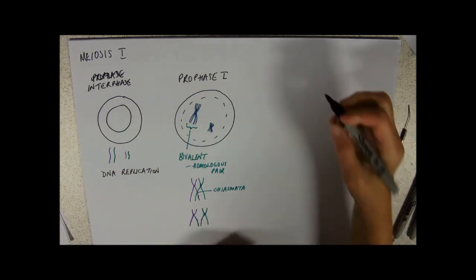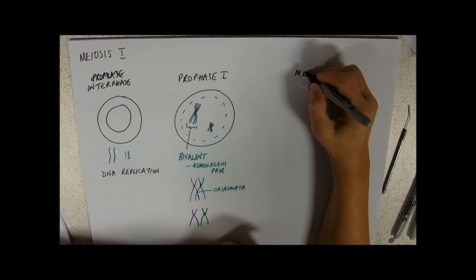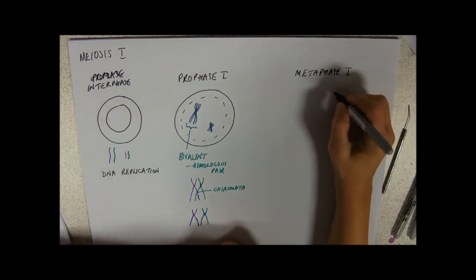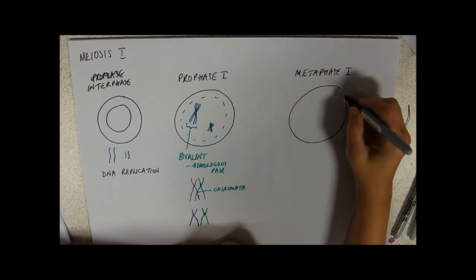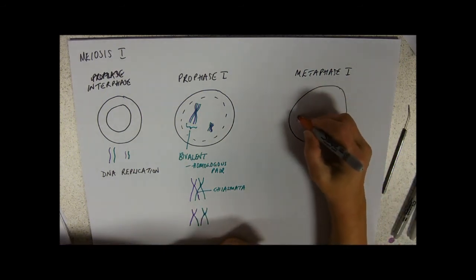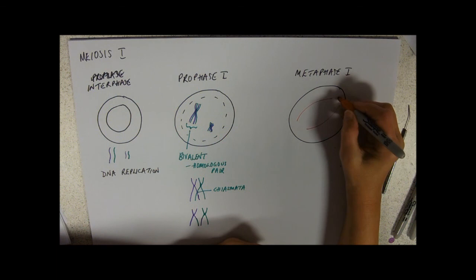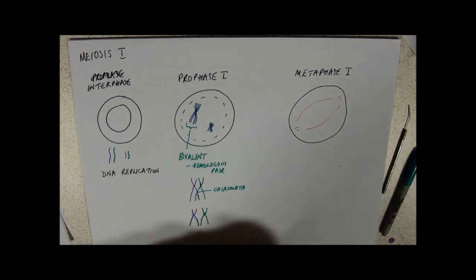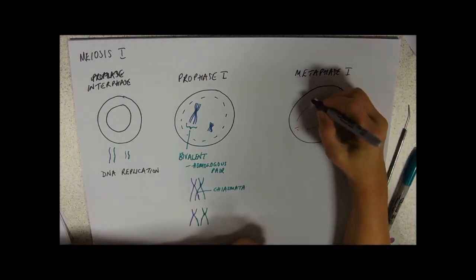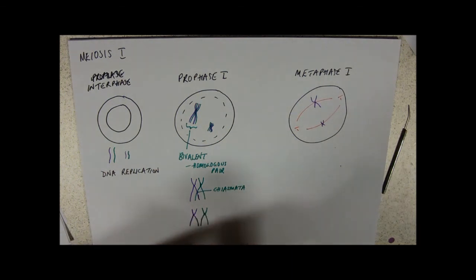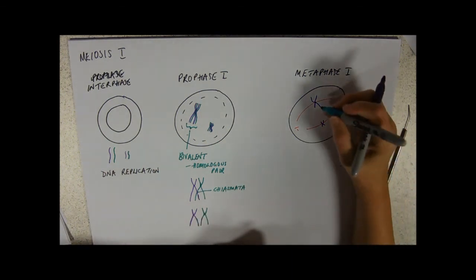Those chromosomes will then head off just in the usual way. And they will line up with the middle. We've got that spindle formation. But again, they're going to move as bivalents. I'm only going to draw two spindles in this time, I need two. And I'm going to put the crossing over a bit in, because my life's too short.